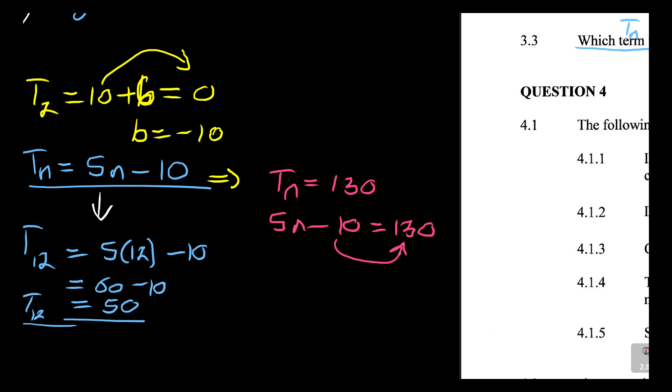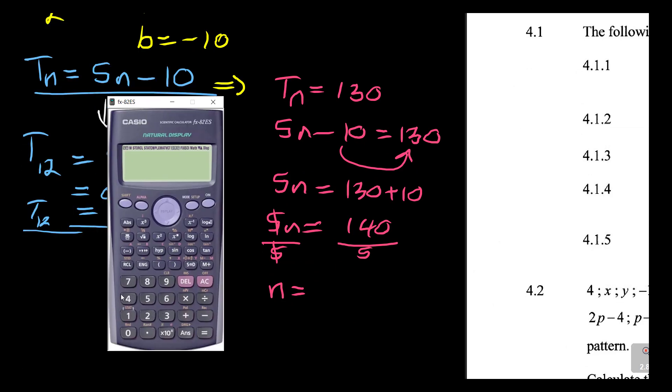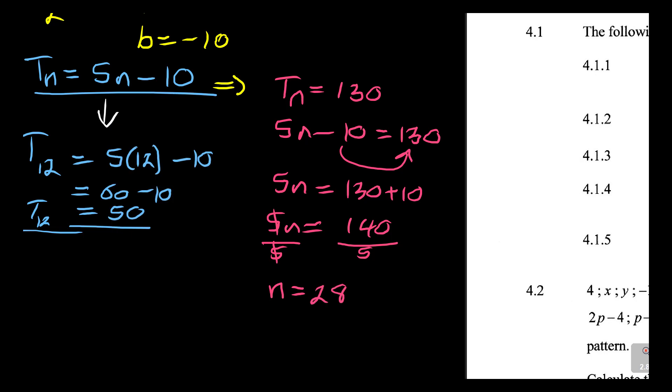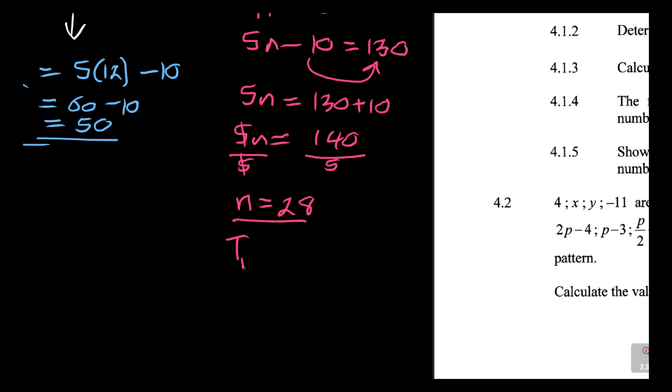Then after that, take 10 to join there. You have got 5N is equal to 130 plus 10. Then you divide by 5. Actually before that, you can then say 5N is equal to 140. That's when you divide by 5. When you do that, it will give us N is equal to, and then if we're dividing 140 divided by 5, it's 28. So the question was which term in the pattern has a value of 30? So we are saying it's T12 is equal to 130, or you can say the 12th term. The answer is either this one or the 12th term.